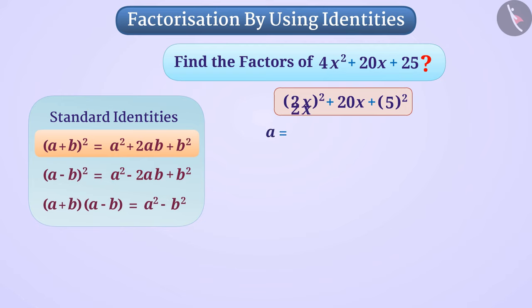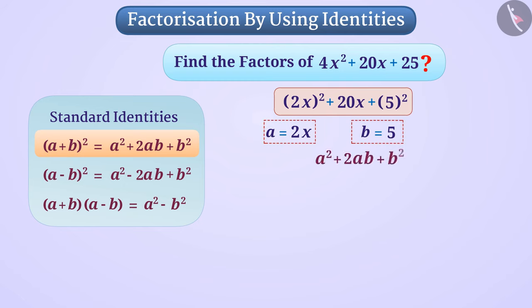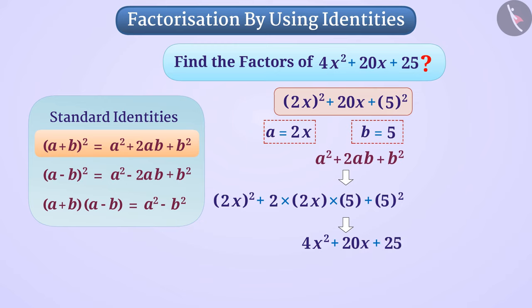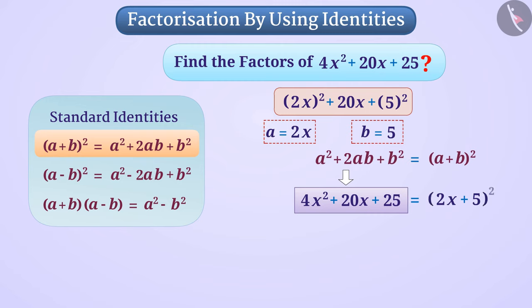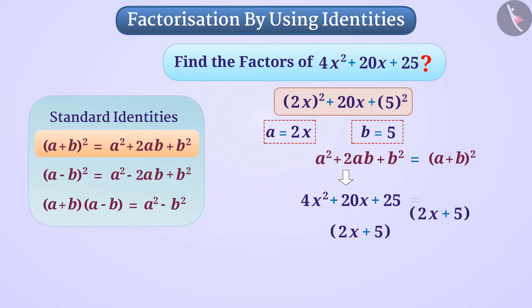If we assume a = 2x and b = 5, then a² + 2ab + b² = (2x)² + 2 × 2x × 5 + 5² = 4x² + 20x + 25, which is similar to the given expression. According to the identity, a² + 2ab + b² = (a + b)². So we can say 4x² + 20x + 25 = (2x + 5)². Thus, with the help of the standard identity, we have factorized this expression.